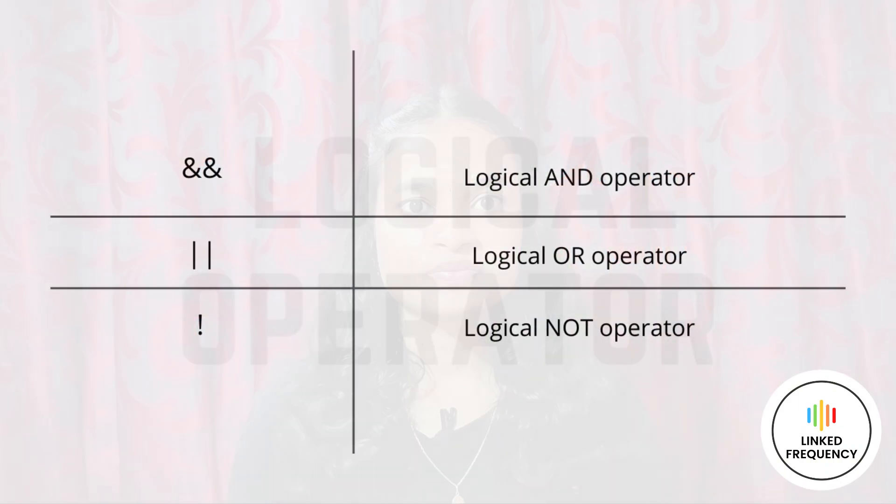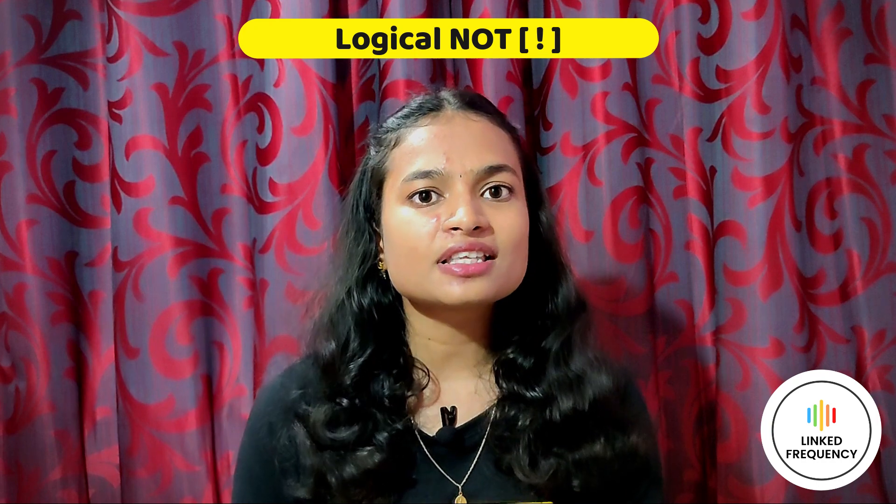Next is the logical operator. C supports three logical operators, also used for decision making. These return either 0 or 1 depending on whether the expression is true or false. Logical AND returns true when both conditions are true. Logical OR returns true when at least one condition is true. Logical NOT reverses the state of the operand — for example, if the condition is true, logical NOT makes it false.